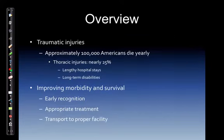Traumatic injuries account for approximately 100,000 American deaths yearly, with thoracic injuries comprising nearly 25% of those deaths. They result in lengthy hospital stays and long-term disabilities. More men and women ages 1 to 44 die from traumatic injuries than any other cause. Our general goal should be improving morbidity and survival through early recognition, appropriate treatment, and transport to the proper facility.